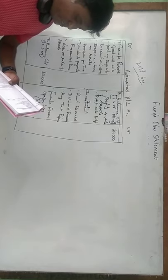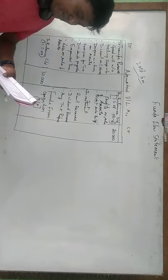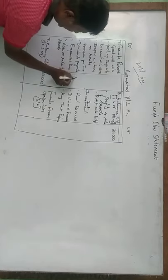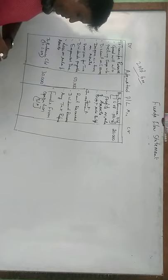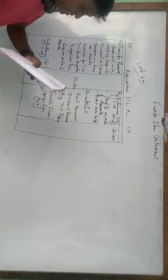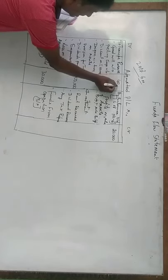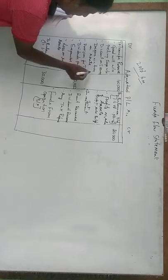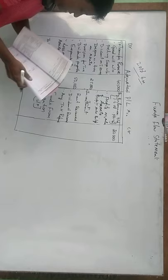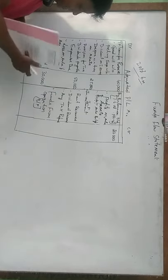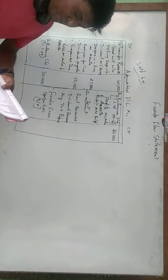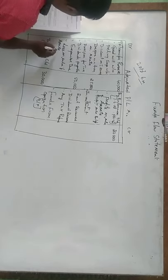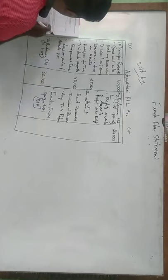For the year ending 31st March 2009, provision for dividend was to be made to the extent of 50,000 rupees — so provision for dividend, which is dividend payable, is 50,000 rupees. Transfer to reserve amounted to 40,000 rupees, which is on the debit side. Depreciation written off is 25,000. And loss on sale of old machinery amounting to 5,000 rupees was debited to profit and loss account.